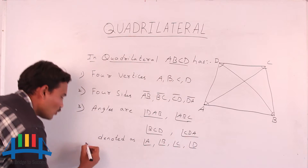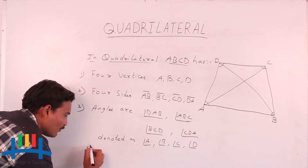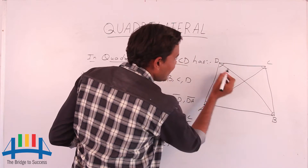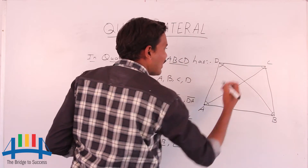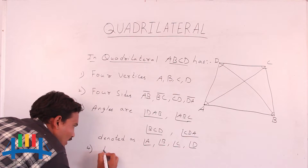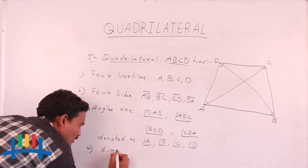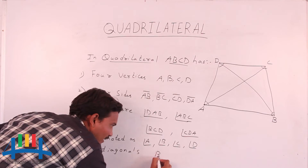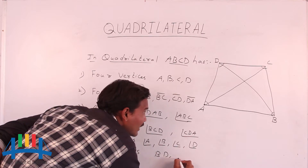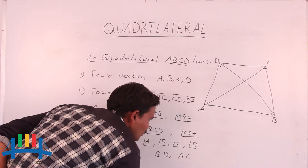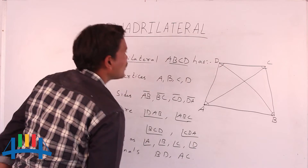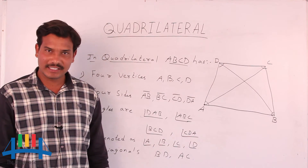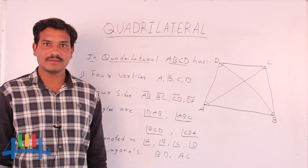For the diagonals, if you look at the figure, we have two diagonals: BD is one diagonal and AC is the other. These are the main parts of a quadrilateral. We will later discuss the various types of quadrilaterals. Thank you.